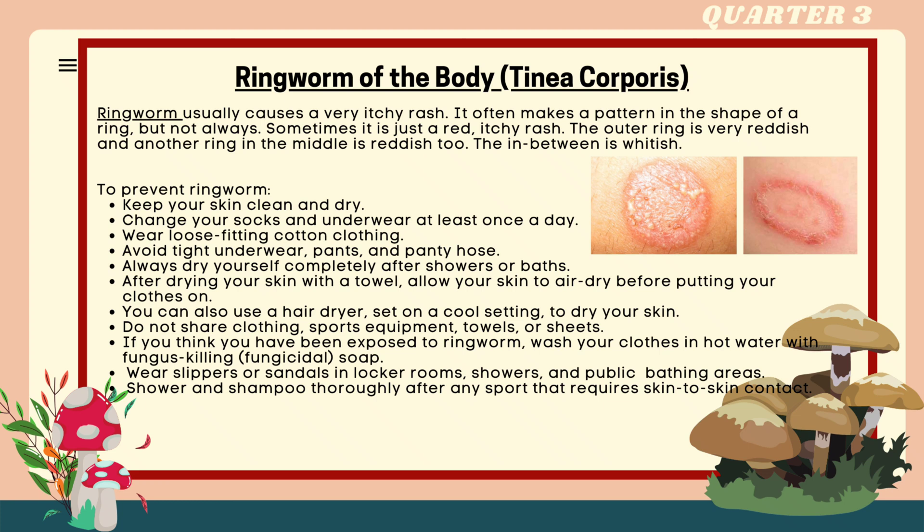After drying your skin with a towel, allow your skin to air dry before putting your clothes on. You can also use a hair dryer set on a cool setting to dry your skin. Do not share clothing, sports equipment, towels, or sheets. If you think you have been exposed to ringworm, wash your clothes in hot water with fungicidal soap. Wear slippers or sandals in locker rooms, showers, and public bathing areas. Shower and shampoo thoroughly after any sport that requires skin-to-skin contact.